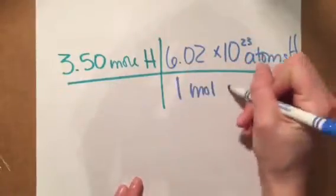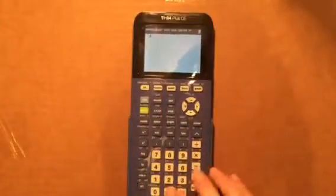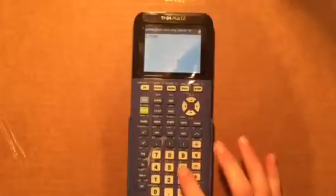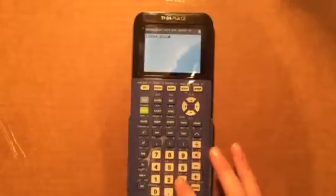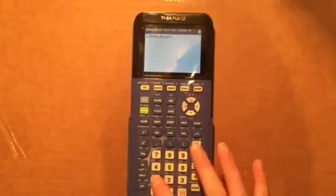Next, you'll take your calculator and put in 3.50 times 6.02 times 10 to the 23rd, divided by 1.